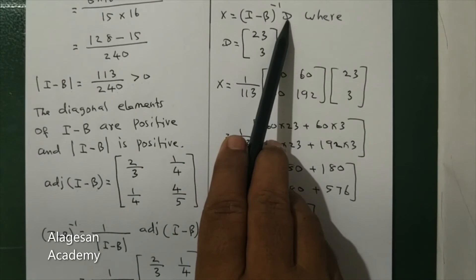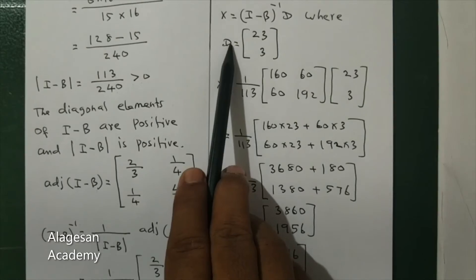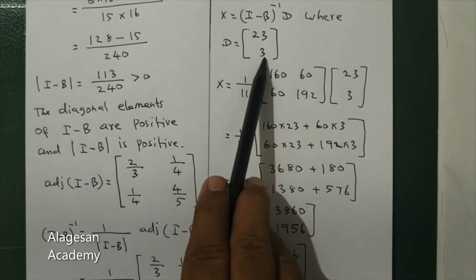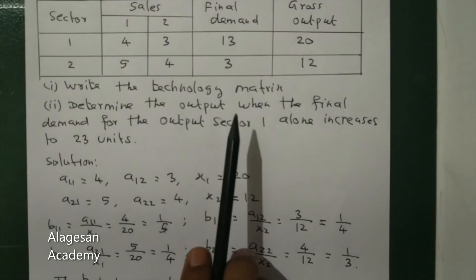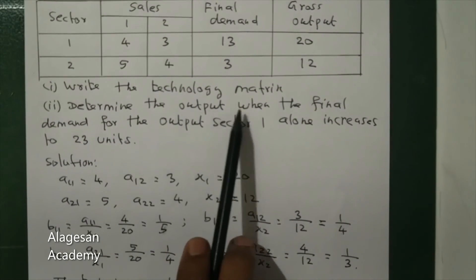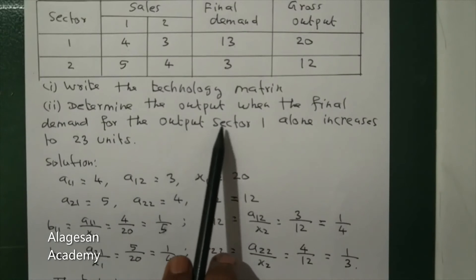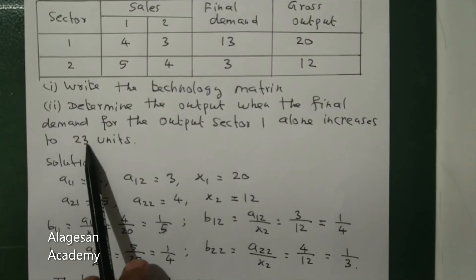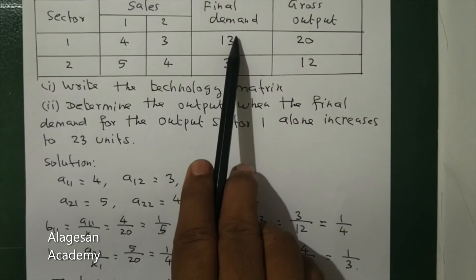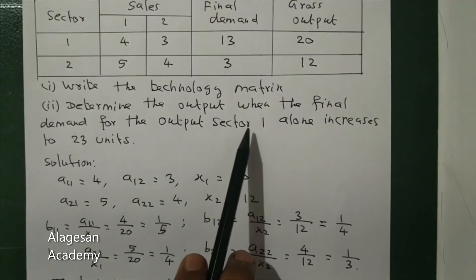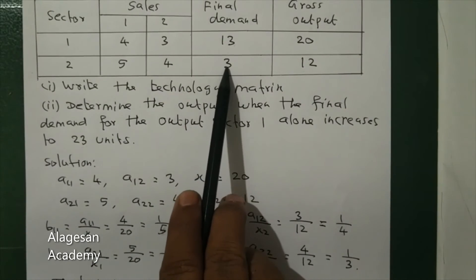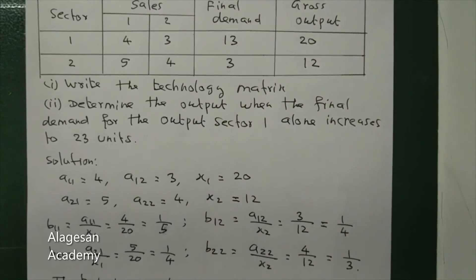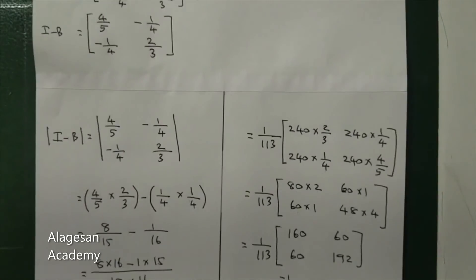To find the output vector X, use the formula X = (I - B)^(-1) × D, where D = [[23], [3]]. This accounts for the final demand of sector one increasing to 23 and sector two remaining at 3.